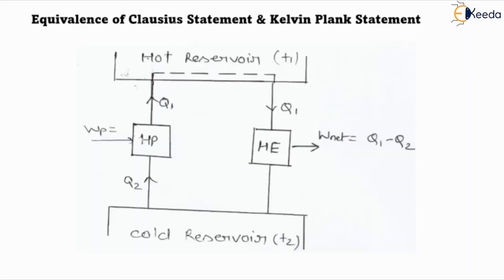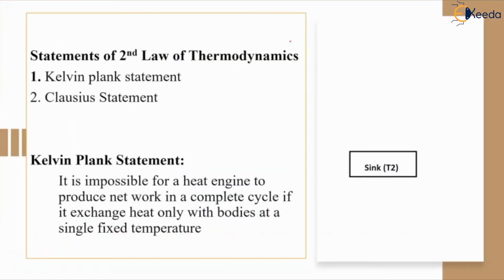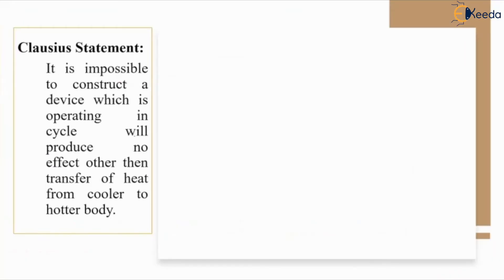The Clausius statement and Kelvin-Planck statement are two different statements. The Kelvin-Planck statement says it is impossible for a heat engine to produce net work in a complete cycle if it exchanges heat only with bodies at a single fixed temperature. The Clausius statement says it is impossible to construct a device which, operating in a cycle, will produce no effect other than the transfer of heat from a cooler to a hotter body.